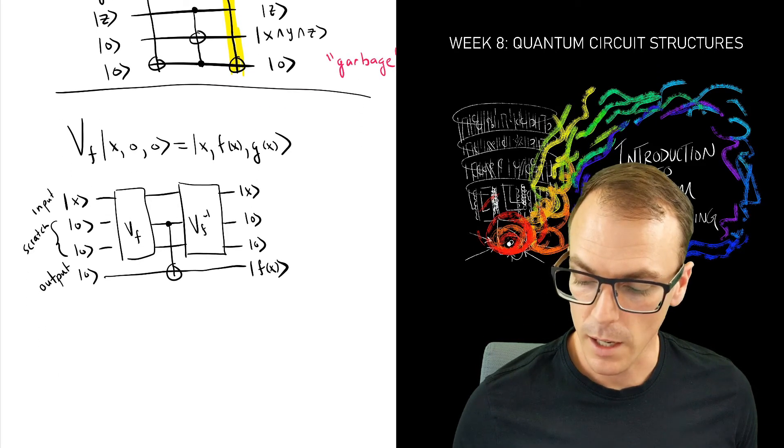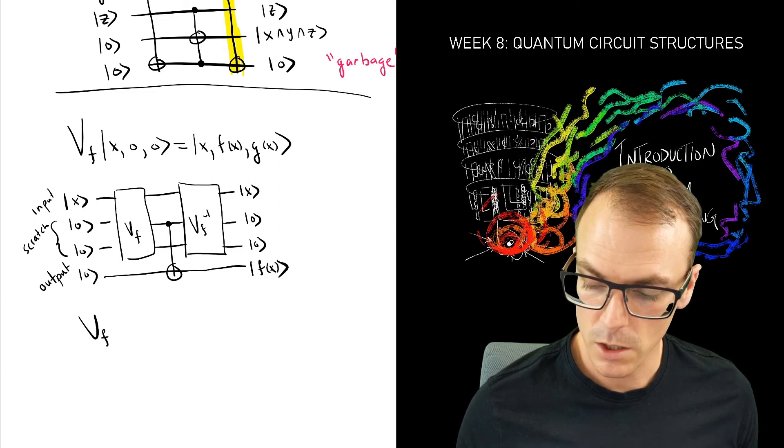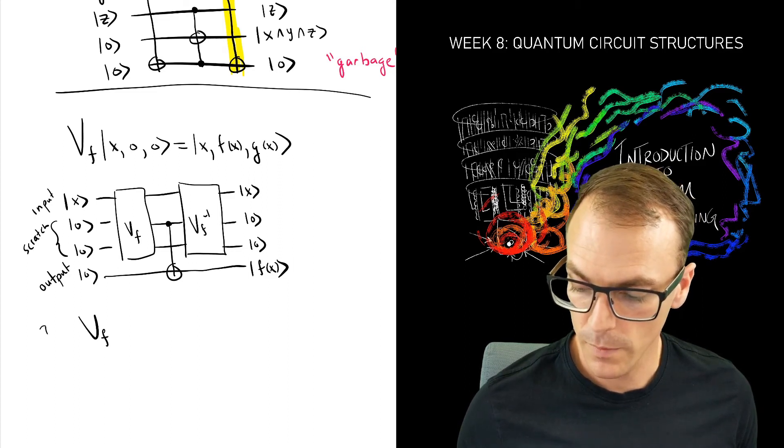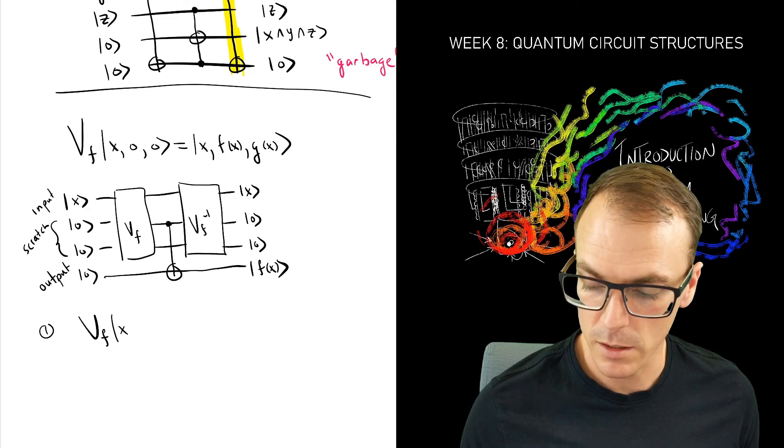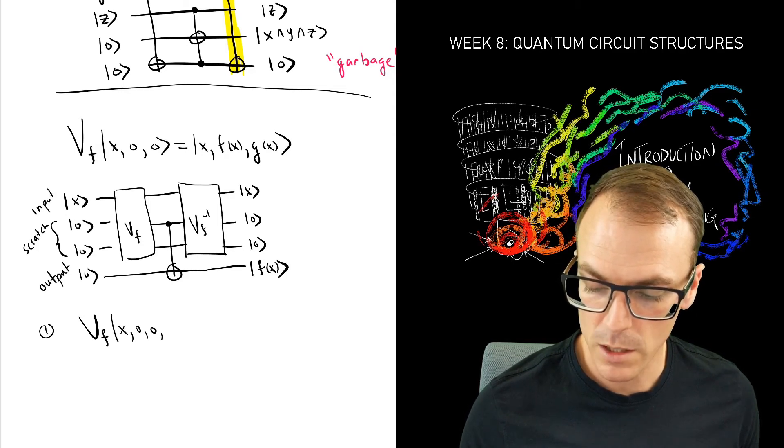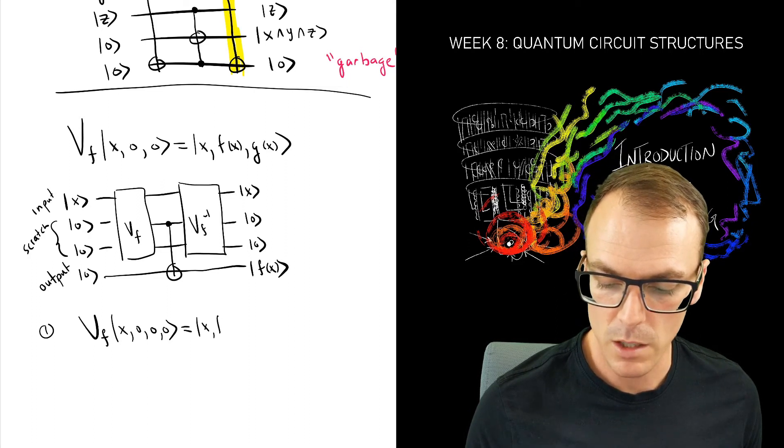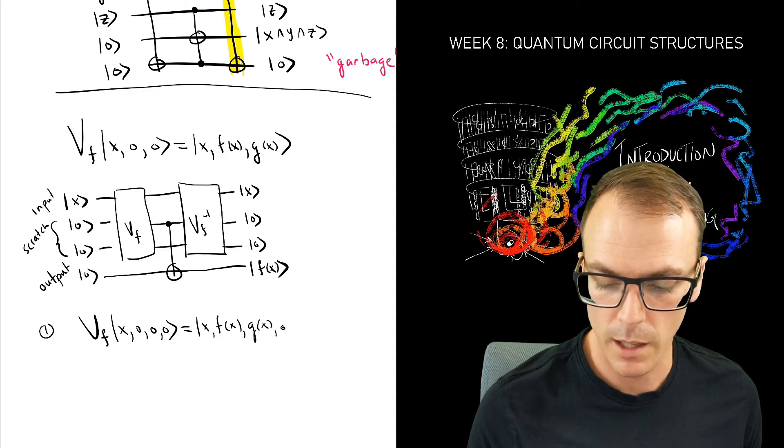So what does this circuit look like in Dirac notation? We have first step, we have V applied to now all four registers. But what happens is that it leaves that last register alone. So we have our function and our garbage and then our last register.